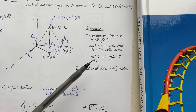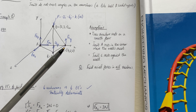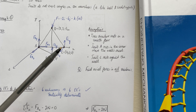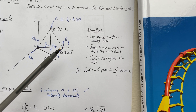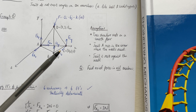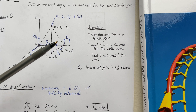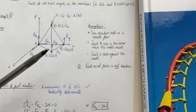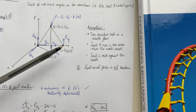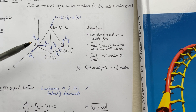Joint C rests against the wall, so it's free to slide along the wall in the x direction but is prevented from translating in the y and z directions, which is why we only have two reaction forces at point C.